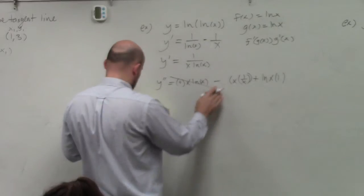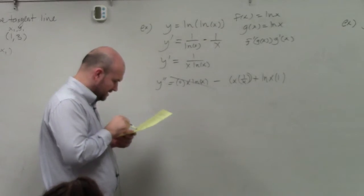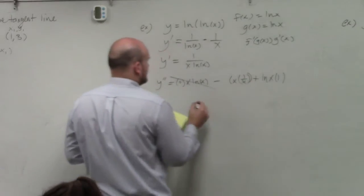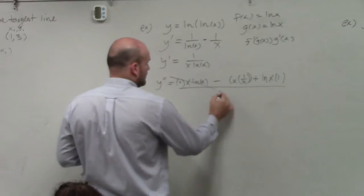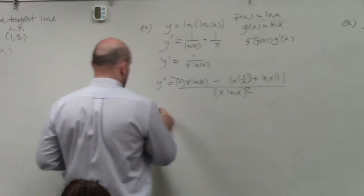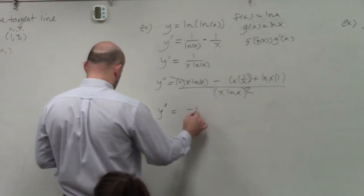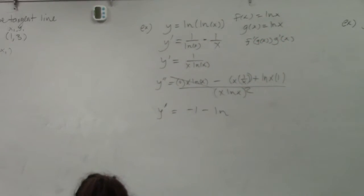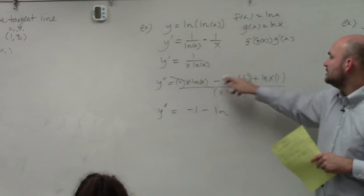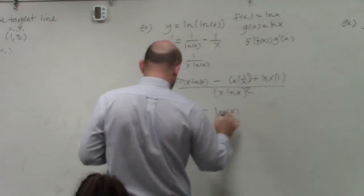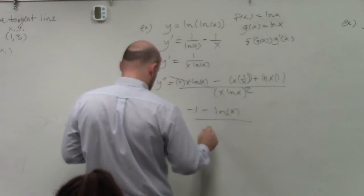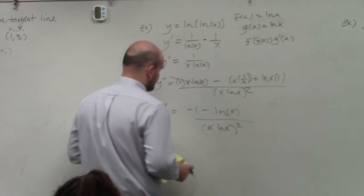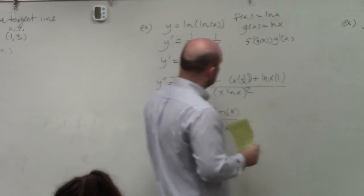Oh, well, that cancels into 1, so that goes to ln of x plus 1. And then all over x ln of x squared. So y double prime equals negative... that becomes x over x. x over x becomes 1, so that becomes negative 1. And then this becomes ln of x all over, I'll just leave that as x ln of x squared.